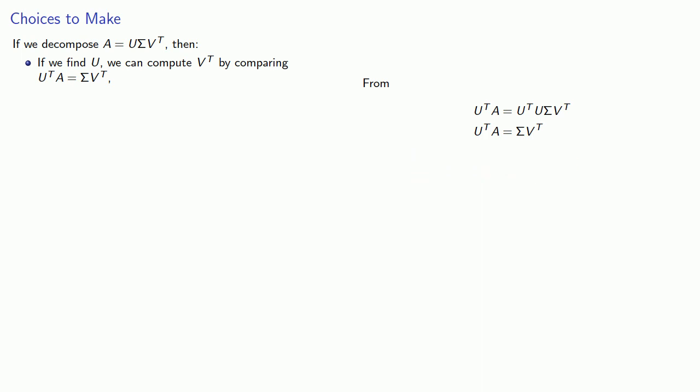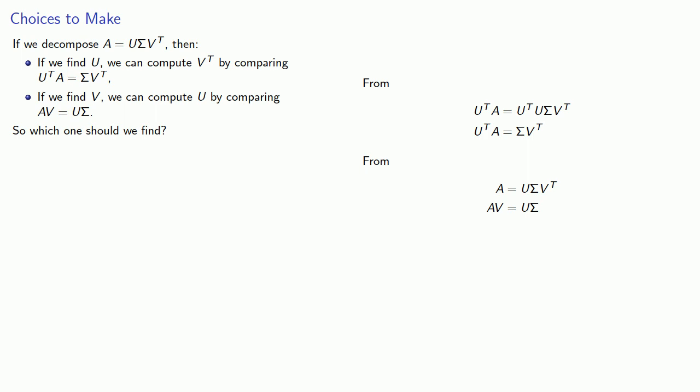Or we could have found V first, and then we can compute U by comparing A V equals U sigma. So again from our decomposition, this time right multiplying by V gives us A V equals U sigma. And again by assumption, at this point we will have found V and sigma. And so the question is, which one should we find? And the answer is, it doesn't really matter, but we can choose to find the easier one.